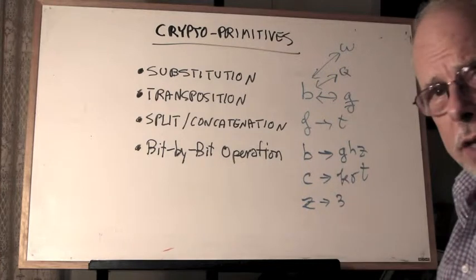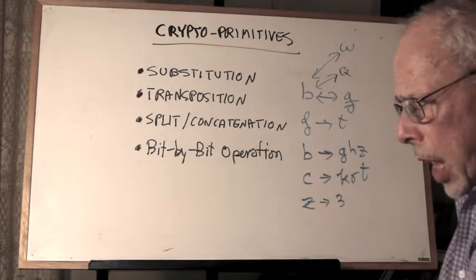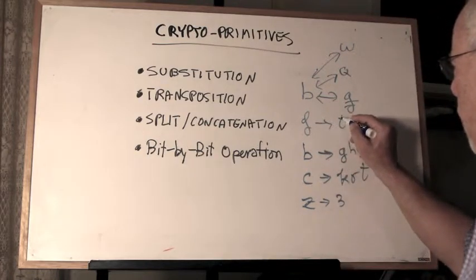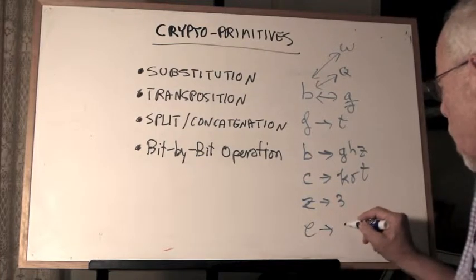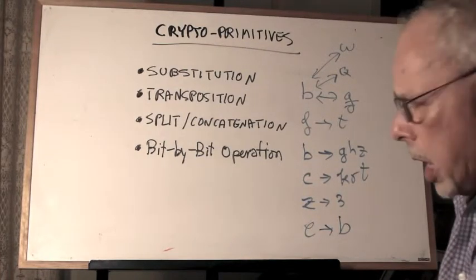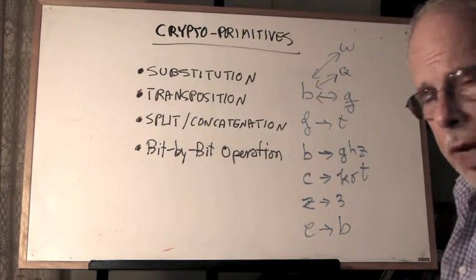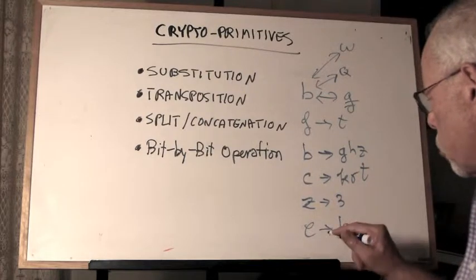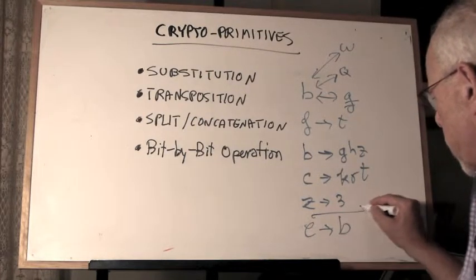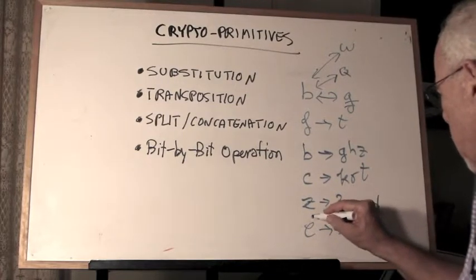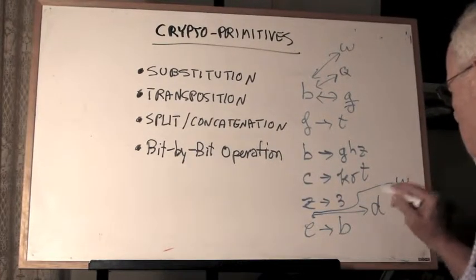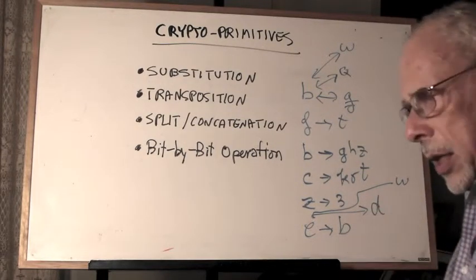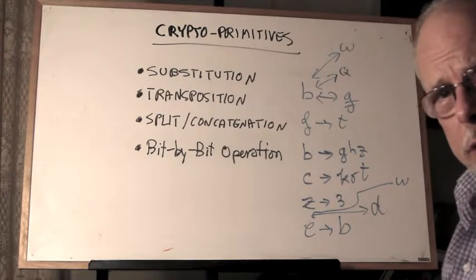The table that specifies this substitution can be static, meaning every time that you see an F it becomes T, every time that you see an E it becomes B, or it can be dynamic. Dynamic means that the first time that you encounter an E it translates to B, the second time you encounter E it translates to D, the third time it translates to W or whatever. The dynamic one is the one that we use today.